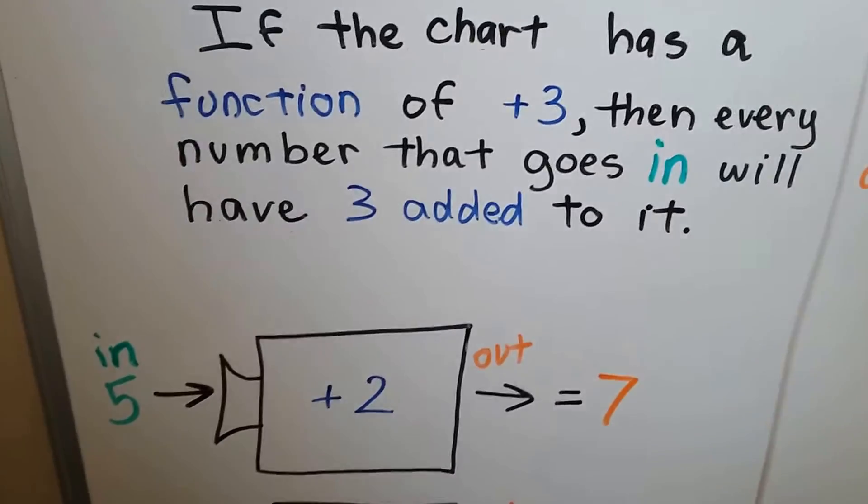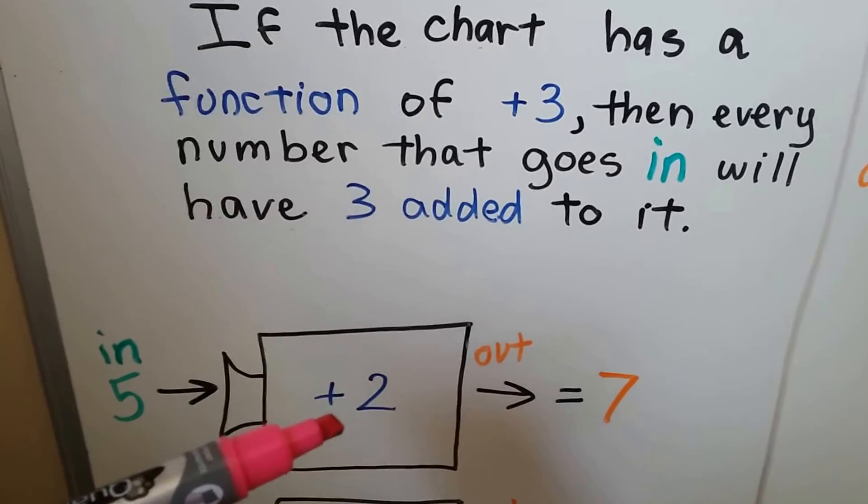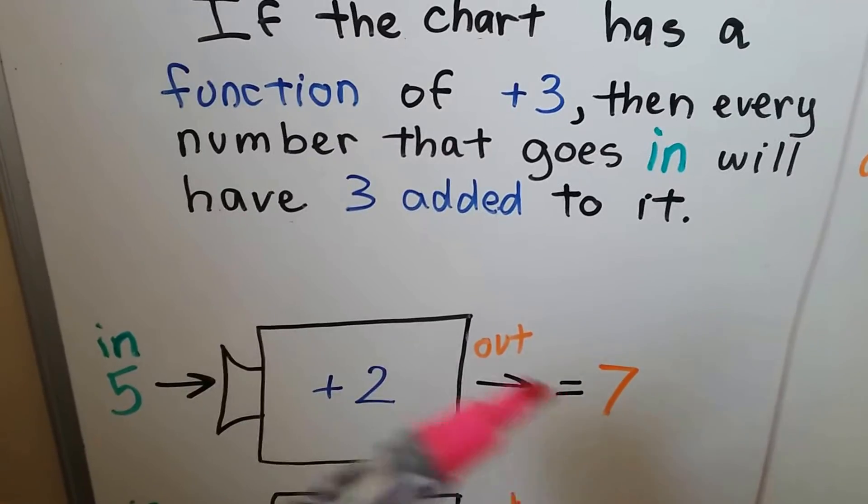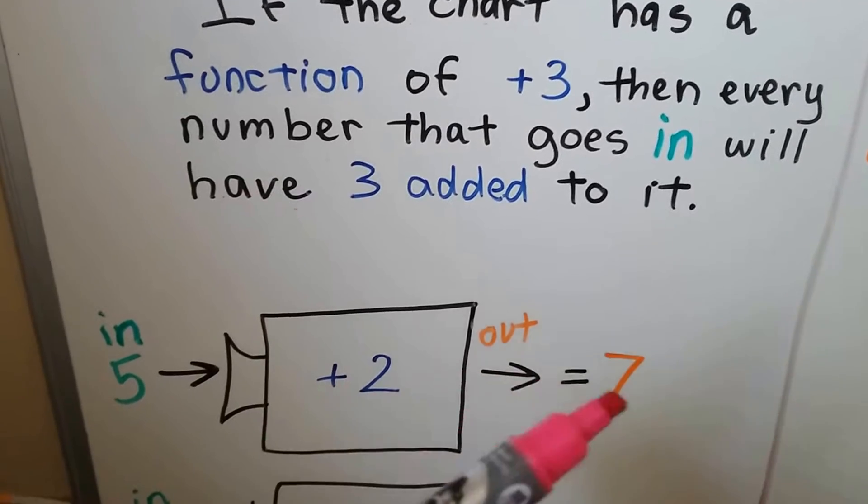If this was a function machine of plus 2, then every number that we put in is going to have 2 added to it, and what comes out is going to be 2 larger than what went in. If you put a 5 in, that's going to have 2 added to it and come out as a 7.